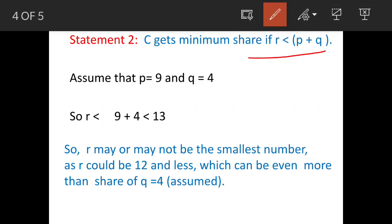Statement 2: C gets minimum share if r is less than p plus q. Definitely, I mean this is a definite statement. Now let us assume that p is 9 and q is 4, as we worked out in the previous statement. So r is less than p plus q, 9 plus 4 is 13.